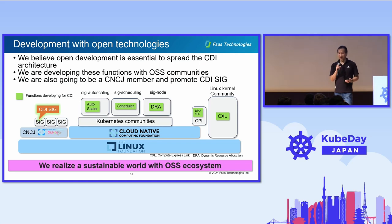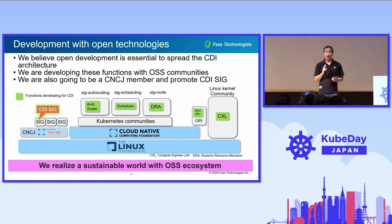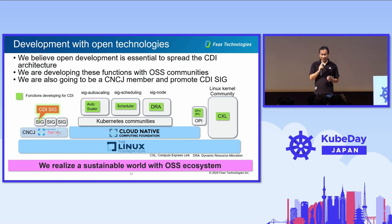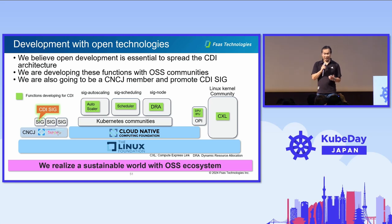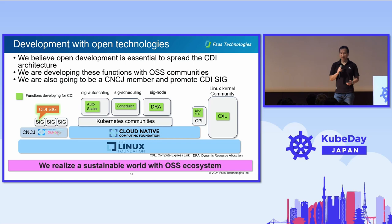To widely spread the CDI architecture, we believe open development is essential. Right now, we are developing these functions with OSS communities. For example, we are developing CDI operators and DRA extensions with the Kubernetes community, and we are also developing CXL functions with the Linux kernel community. Moreover, we are going to become a member of Cloud Native Computing Japan and promote a CDI special interest group. We want to realize a sustainable world with OSS communities.